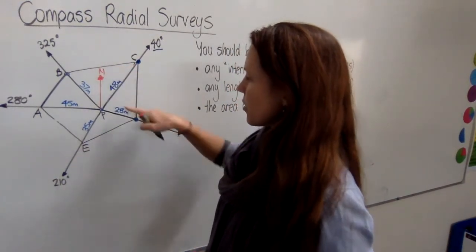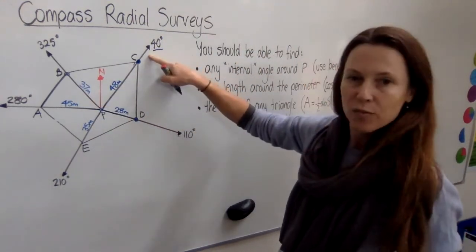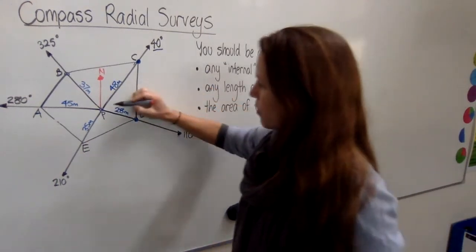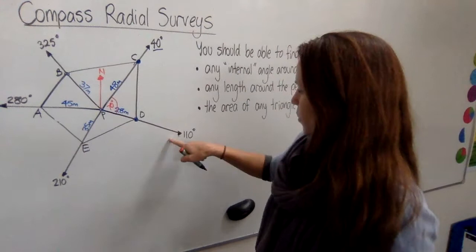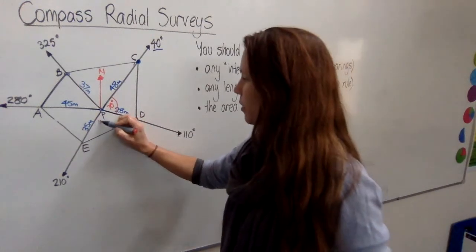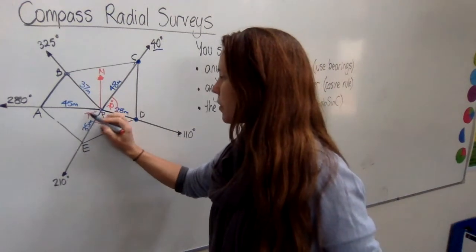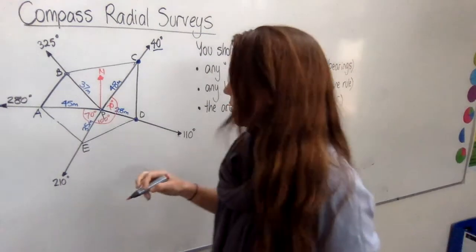So the easiest ones to find would be all of these. Now why are they easy? Well if this is 40 degrees and this is 110, then between these two we must have 70 degrees in here. Between 110 and 210 this will be 100, and so on. So you're just subtracting the number of degrees between each of these bearings, and they should obviously all add up to 360.